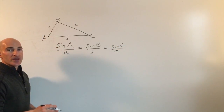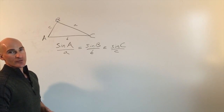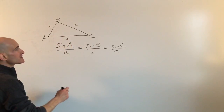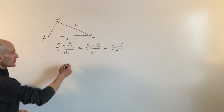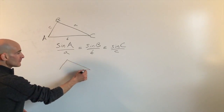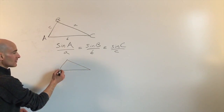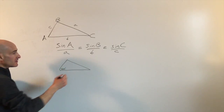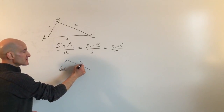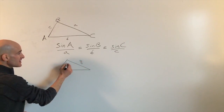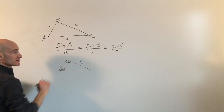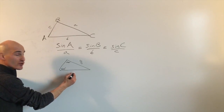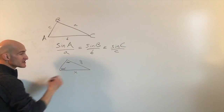You only need to use two of these three ratios to form a proportion. For example, let's take this triangle here: say this angle is 60 degrees, this side over here is 8, this angle here is 100 degrees, and we want to find the side across from that angle — we'll just call this side x.